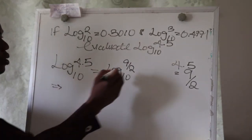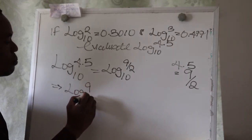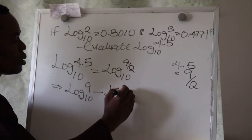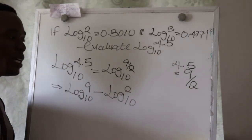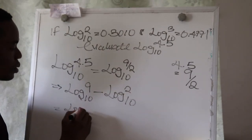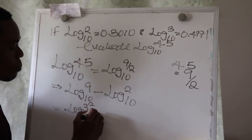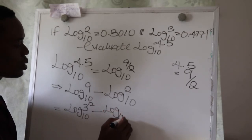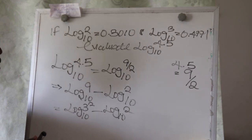Log of 9 over 2 base 10 will now give us log 9 base 10 minus log 2 base 10, by the laws of logarithm. This will now give us log of 3 raised to power 2 base 10 minus log 2 base 10.